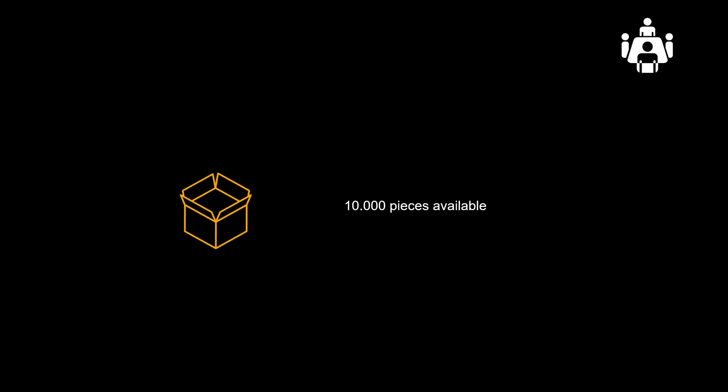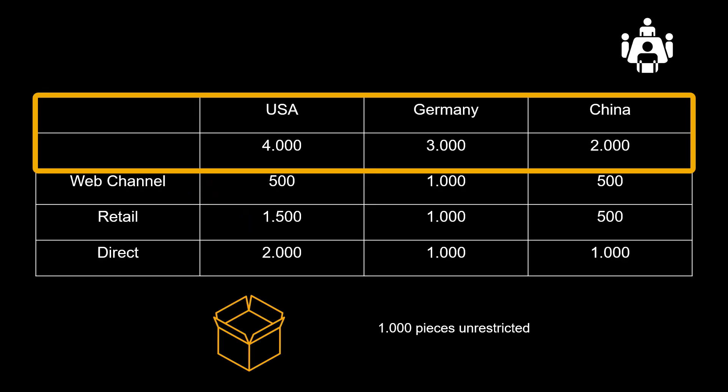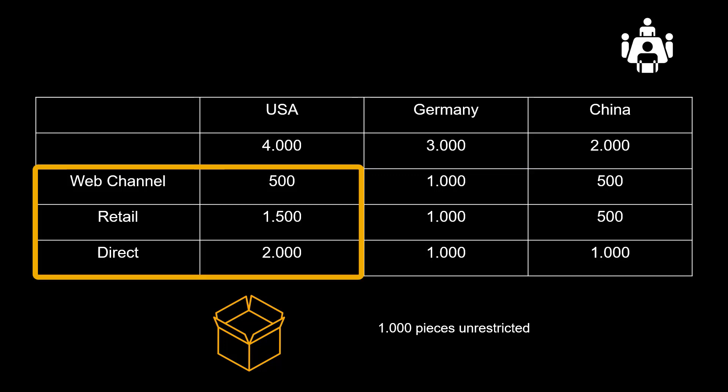In this demonstration we will see the following happen. We have 10,000 pieces available on stock. In this matrix we see the two dimensions which we are doing supply protection against. We can see 4,000 pieces being protected for the American market, 3,000 pieces for the German market, and 2,000 for the Chinese market. These are horizontal protection, as they are having equal priority. We can also see that the different channels are also protected — this is vertical protection. The web channel has a higher priority than retail, which in turn has a higher priority than direct sales.